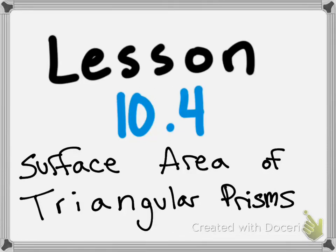Today we're doing lesson 10.4, Surface Area of Triangular Prisms. Similar to our last lesson, we found surface area of rectangular prisms. Here we're doing the same except with triangles. What we did was we found the area of each of the two-dimensional faces and then added them together. We will be doing the exact same thing here.